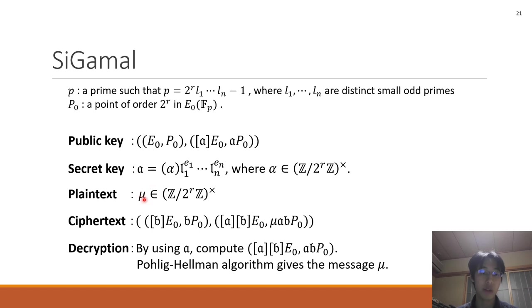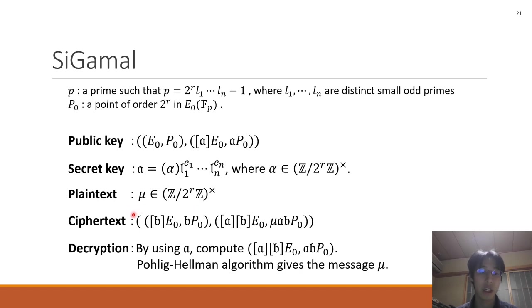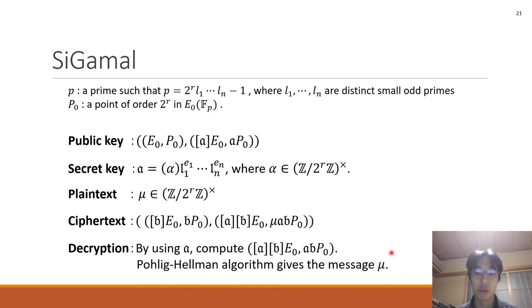The plaintext μ is embedded in the group of units of Z/2^{r_p}Z. And this is the ciphertext. In decryption, by using R, compute R*(B*E0) and R*(B*P0), and using the Pohlig-Hellman algorithm, you can recover the message μ. This is the construction of C-GAMMA.